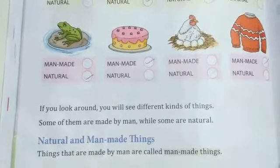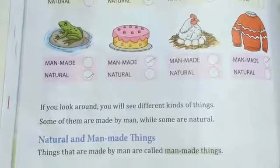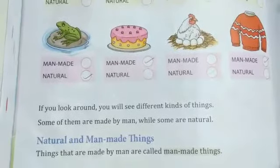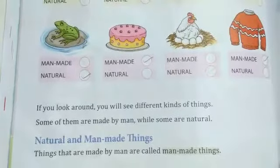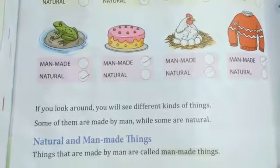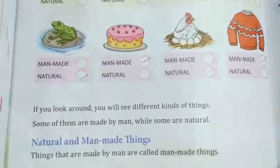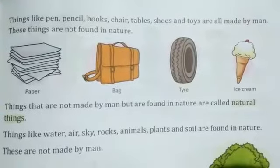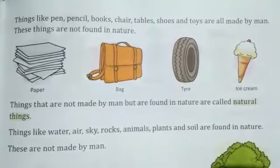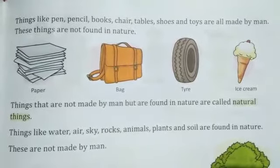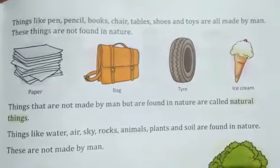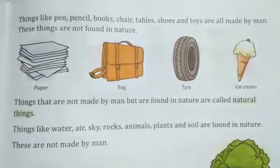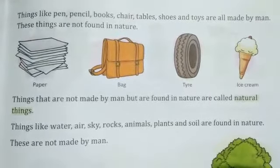Now if we look around, we will see different kinds of things in our nearby surrounding area. Some of them are made by men while some are natural. Things that are made by men are called man-made things. Things like paint, pencil, book, chair, table, shoes, and toys are all man-made things, and these things are not found in nature because we have created them.